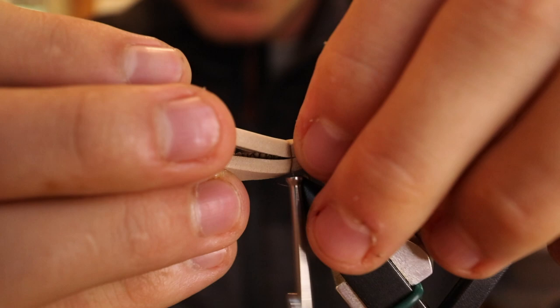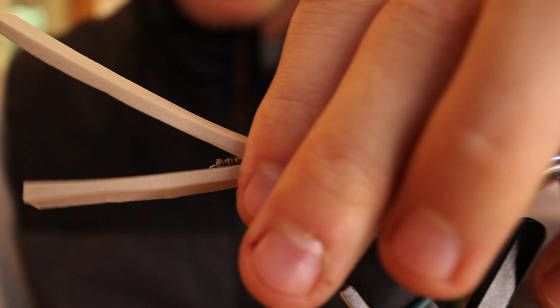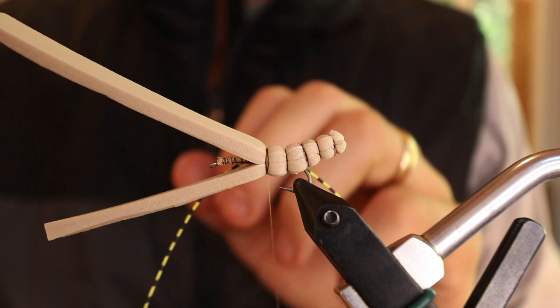I'm going to do 2 more segments on the hook itself now and I'll tie in my legs. I'm going to use round rubber leg on this, just yellow round rubber leg with bars on it. I find that's the best to do for this fly, it's the fastest and easiest, has the best profile.